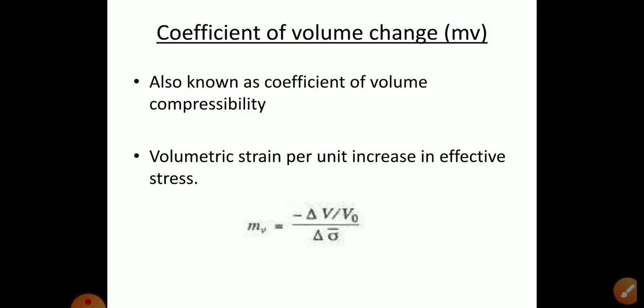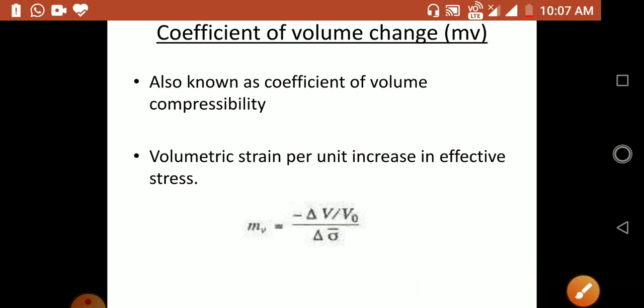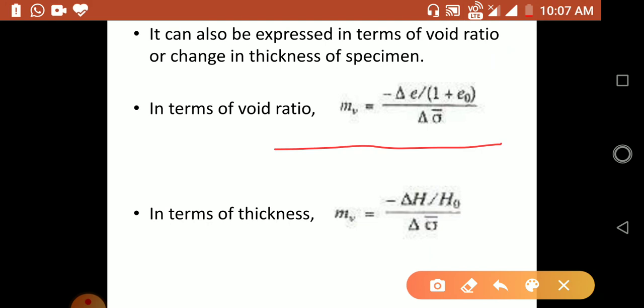The next important definition is the coefficient of volume change, mv, also known as the coefficient of volume compressibility. It represents the volume strain per unit increase in effective stress: mv = −(ΔV/V₀) / Δσ̄. Volume decreases with increase in effective stress, hence the negative sign. It can also be expressed as: mv = −(Δe / (1 + e₀)) / Δσ̄, or in terms of thickness: mv = −(ΔH / H₀) / Δσ̄.